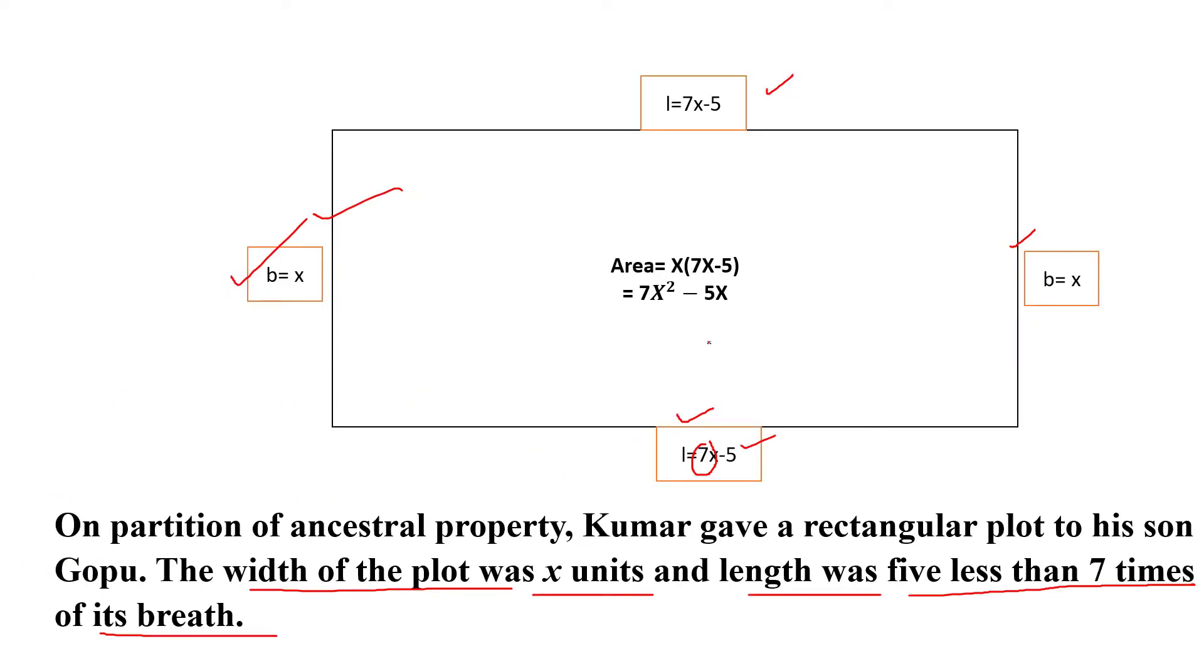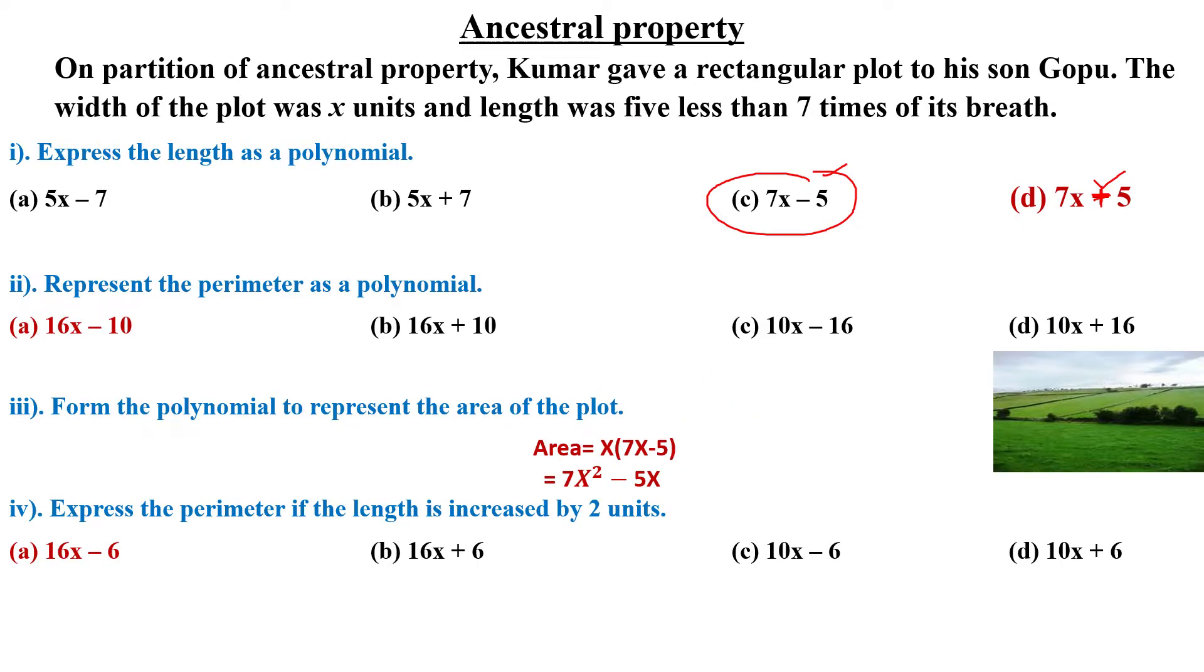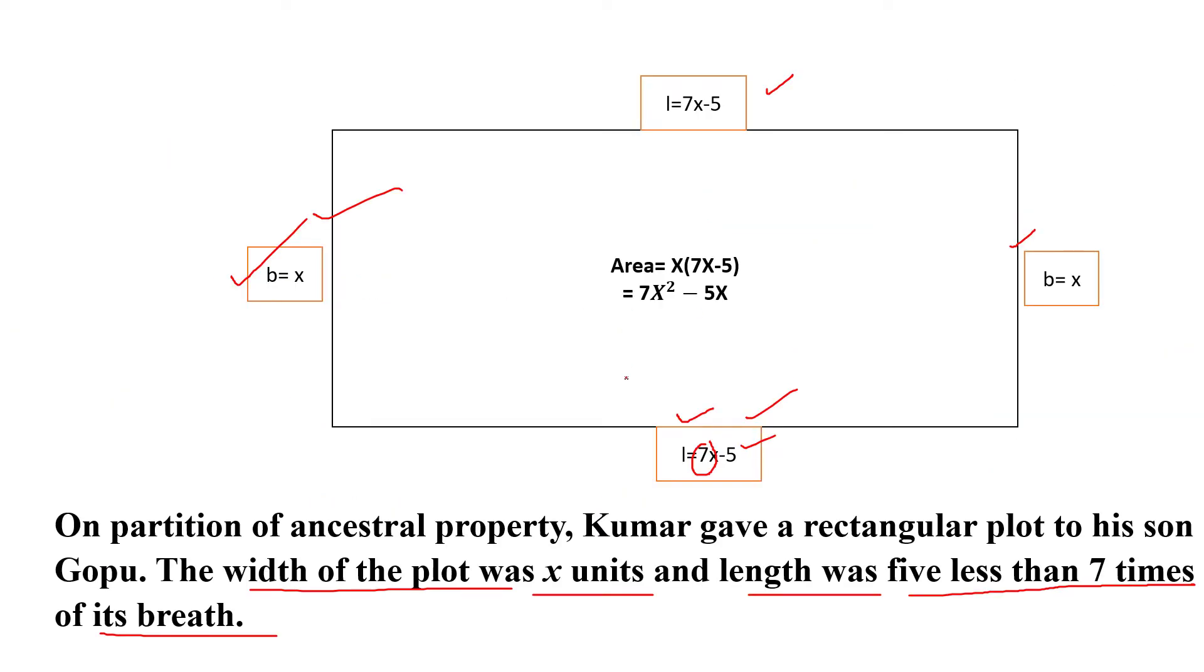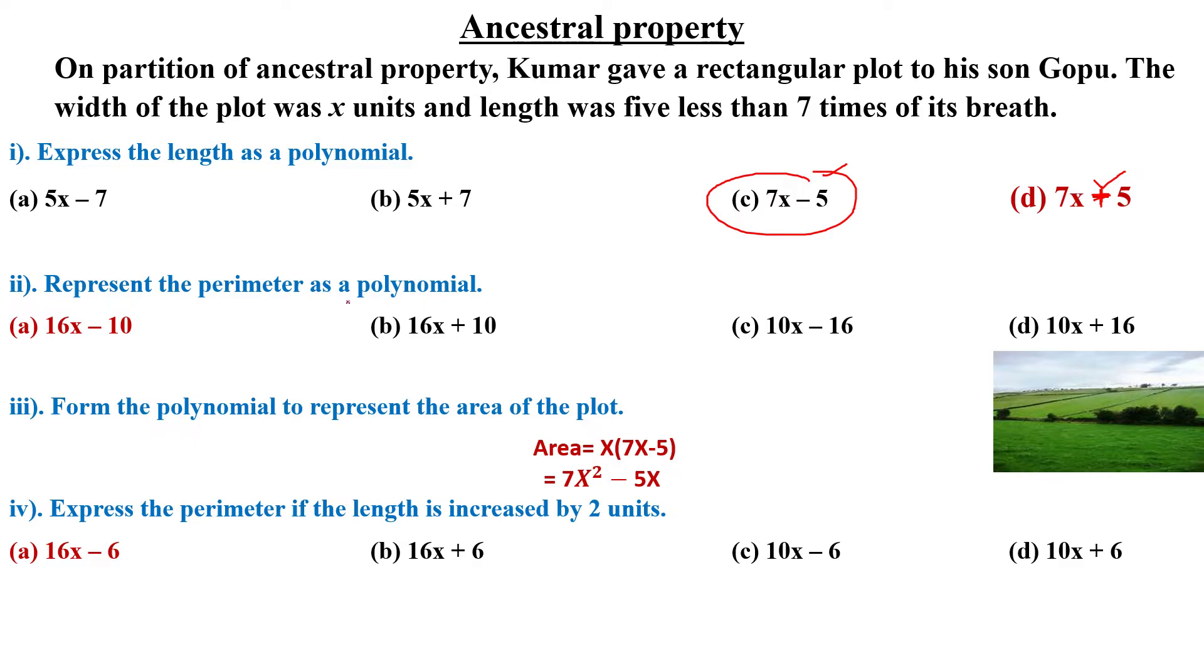Represent the perimeter as a polynomial. The perimeter is twice the length plus breadth. When you simplify it, your answer will be 16x minus 10.